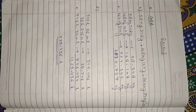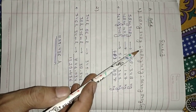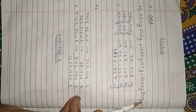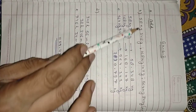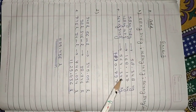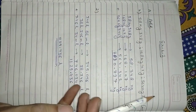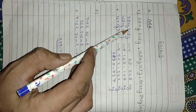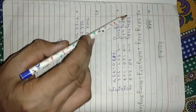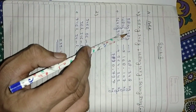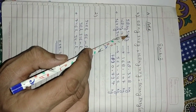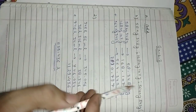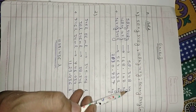First question: add 58 kg 348 g and 64 kg 342 g in kilograms. First, convert all units to kilograms. 58 kilograms stays as it is. Convert 348 grams into kilograms by dividing by 1000, giving 58.348 kilograms.